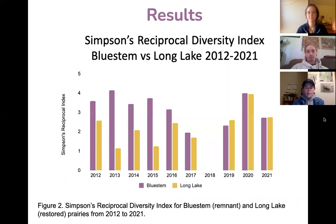We then looked at two of our sites where we have the most data: Bluestem Prairie, which is a remnant prairie, and Long Lake Prairie, which is a restored prairie at Concordia's Field Station. This graph shows an interesting trend for diversity between the two sites over the years, showing that Long Lake, which is restored, is becoming more and more comparable to Bluestem Prairie in terms of diversity.